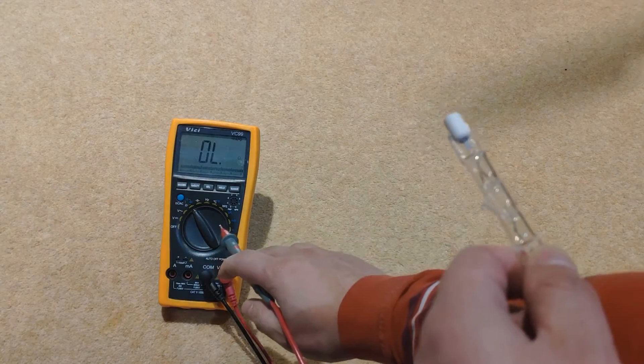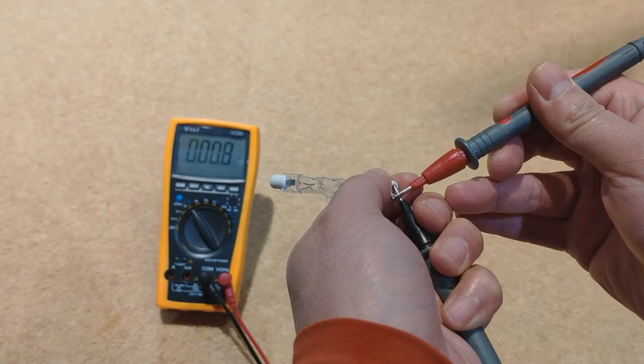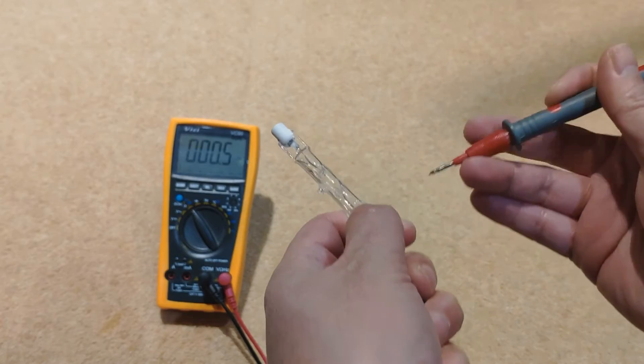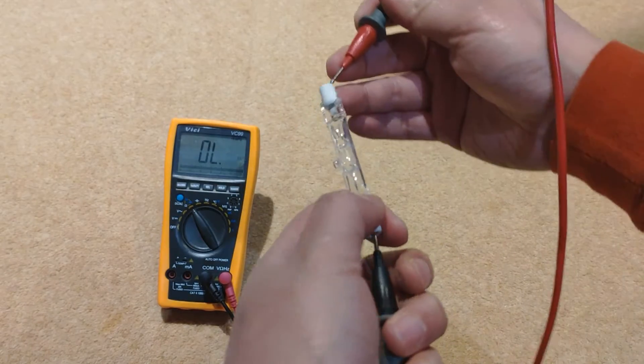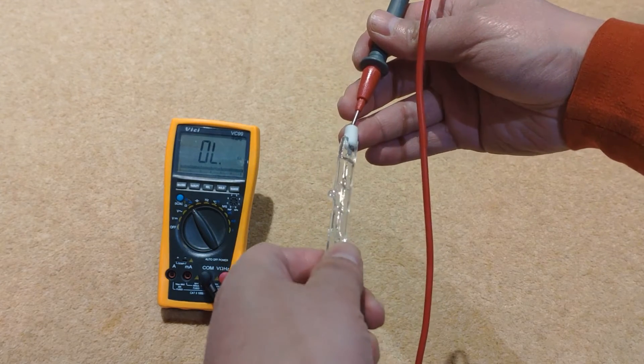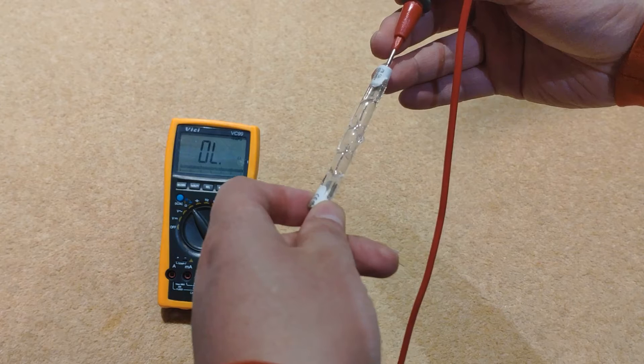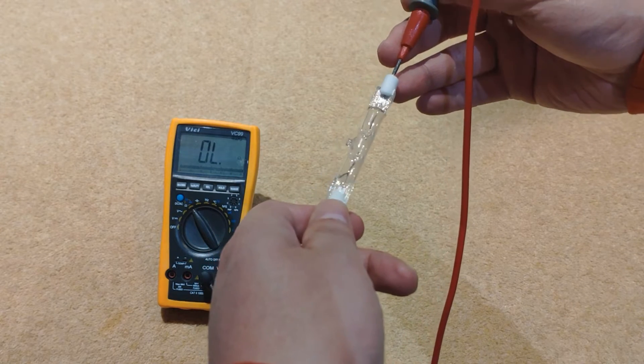Set the multimeter to beep on short circuit. Short the two probes to make sure you hear the beep, which indicates the meter is working. Connect the probes to the bulb. No beep indicates the bulb circuit is open, which means broken.